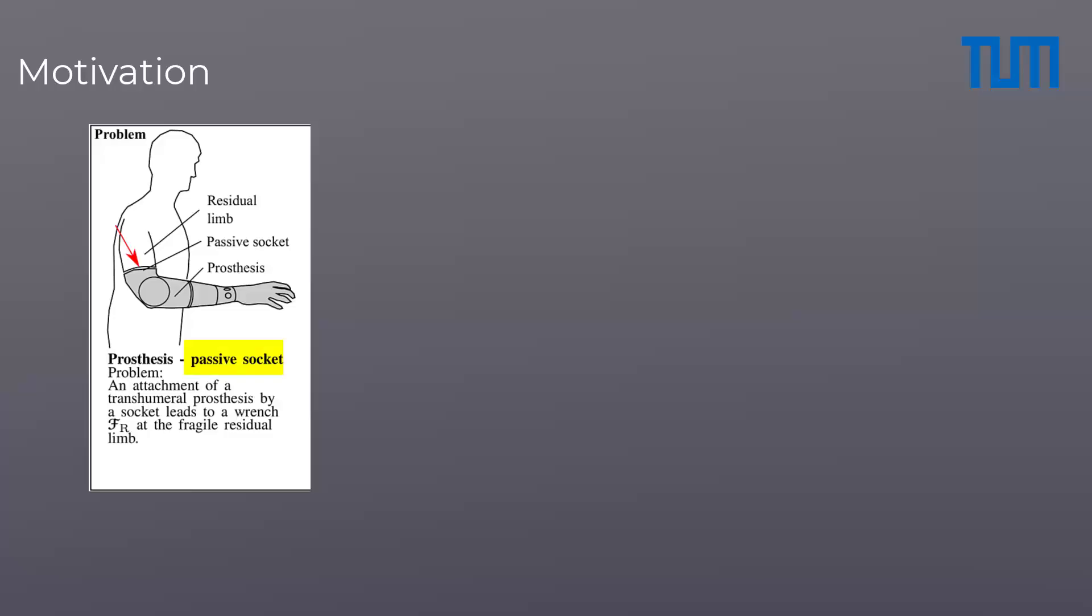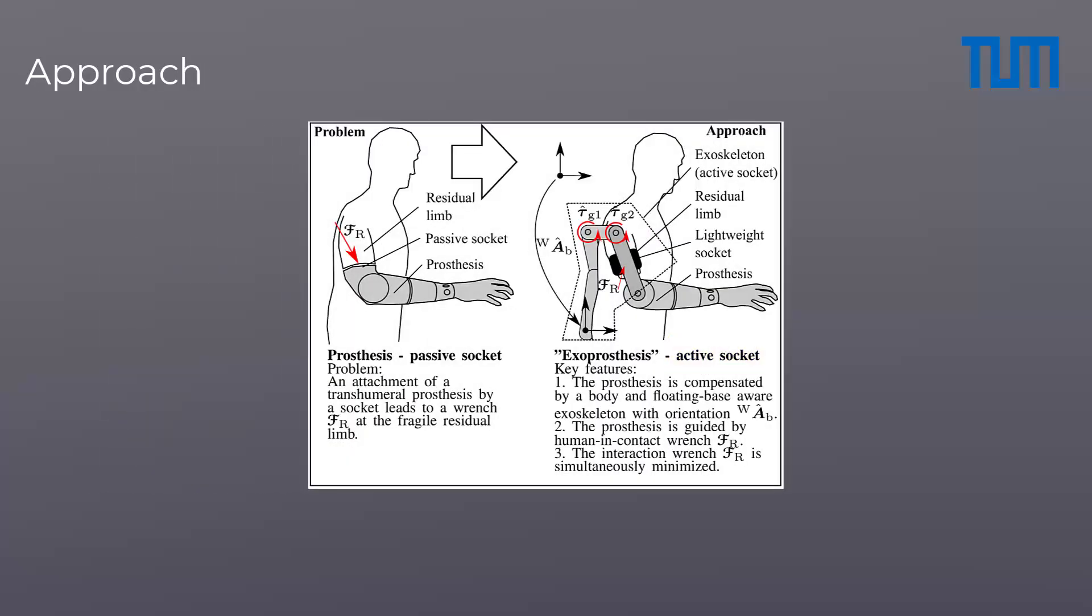Instead of using a passive socket, we propose an active socket using a shoulder exoskeleton. The exoskeleton is equipped with tactile control and a floating base gravity compensation, which applies the right joint torques regardless the body orientation. As a consequence, the exoskeleton carries the prosthesis instead of the user.